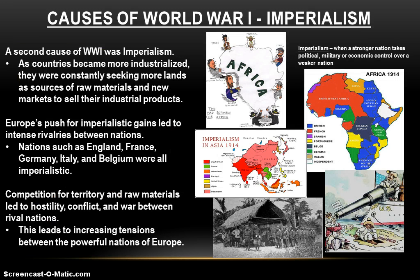A second cause was imperialism. As countries became more and more industrialized, they were constantly seeking more lands as sources of raw materials and new markets to sell their industrial products. Imperialism is when a stronger nation takes political, military, or economic control over a weaker nation. And Europe's push for imperialistic gains is leading to intense rivalries between nations. In the late 1800s and early 1900s, the great powers of Europe are scrambling with each other to gain influence and control over different parts of Africa and Asia, looking to get their hands on very lucrative raw materials and trade markets in those regions for their own economic and political gain.